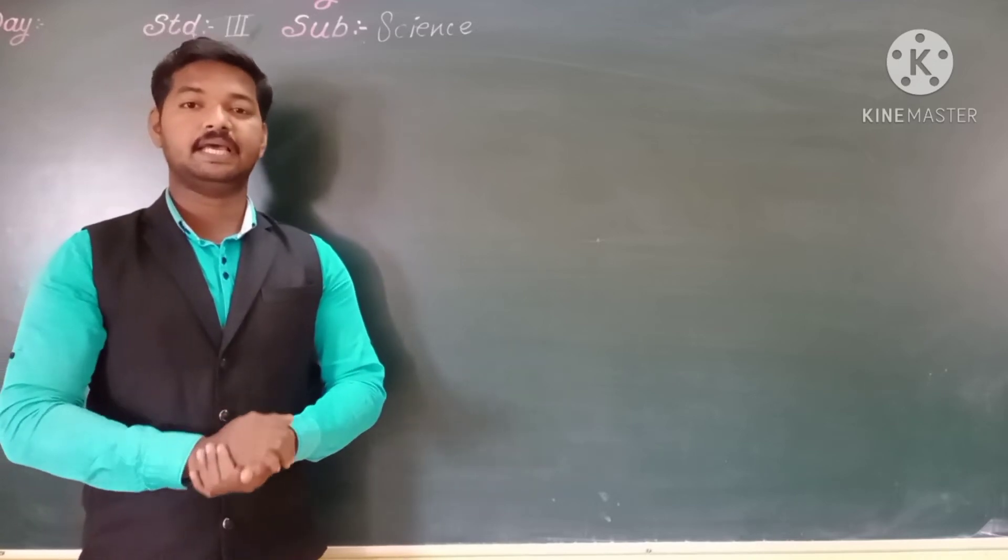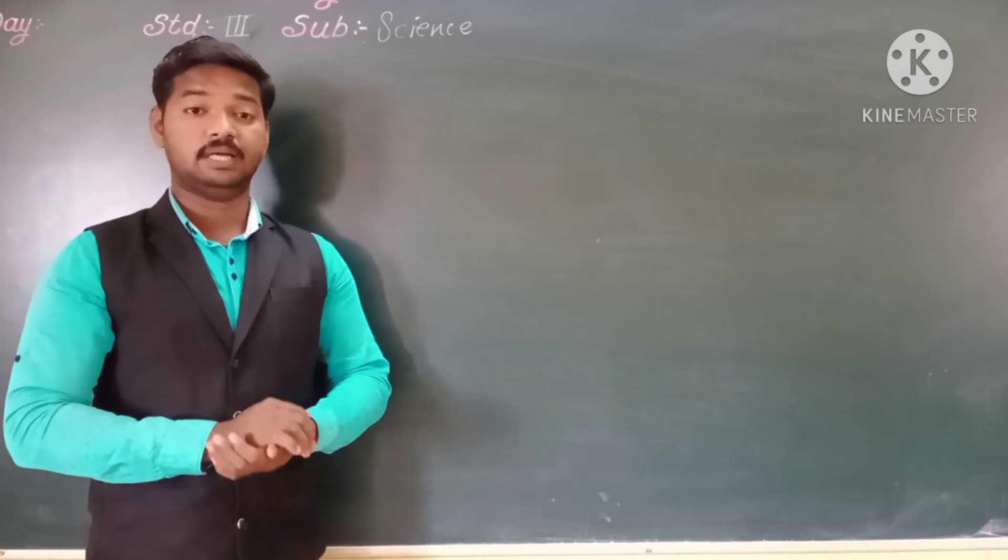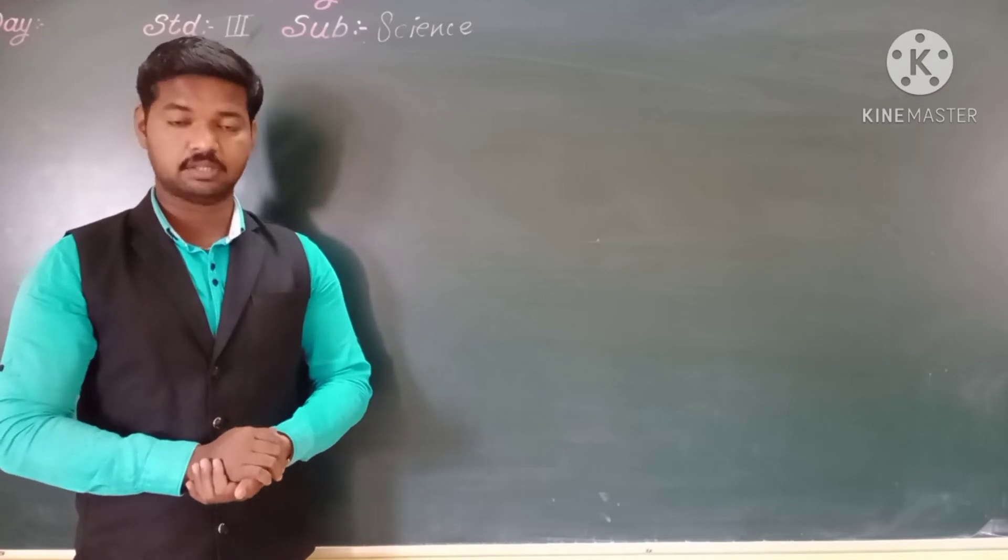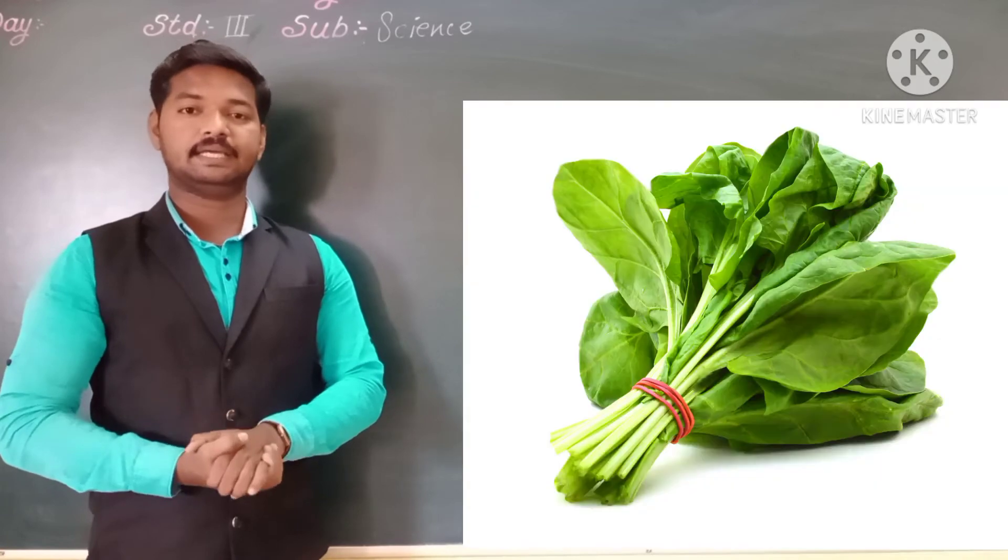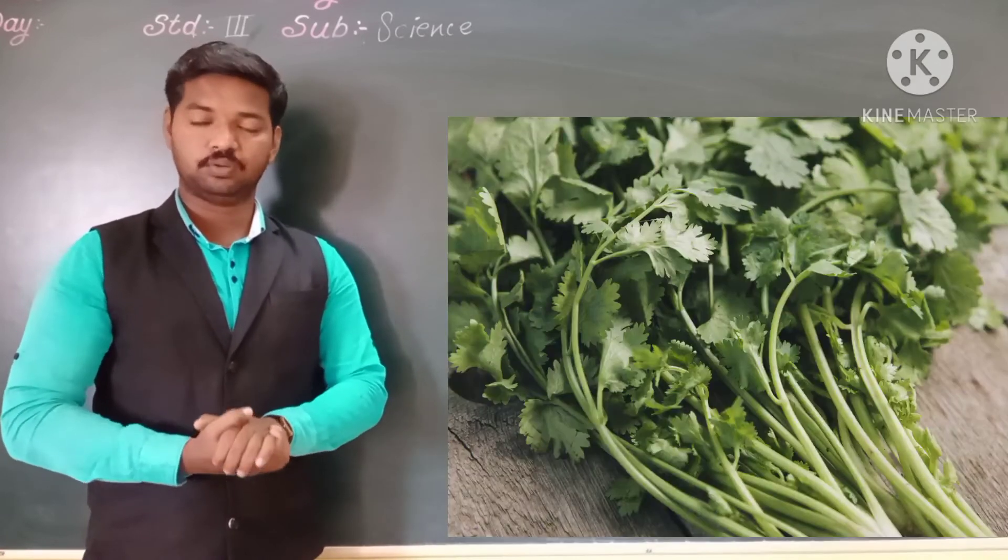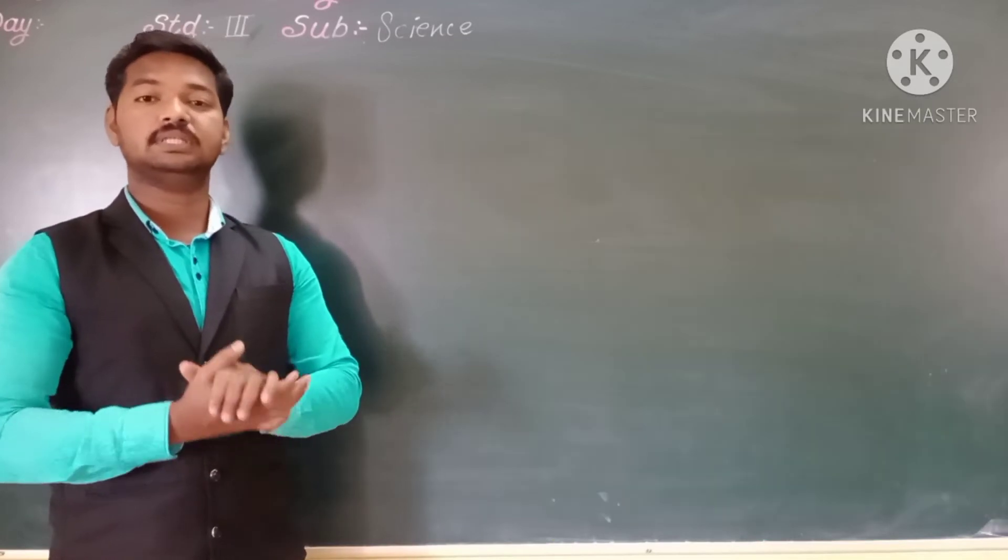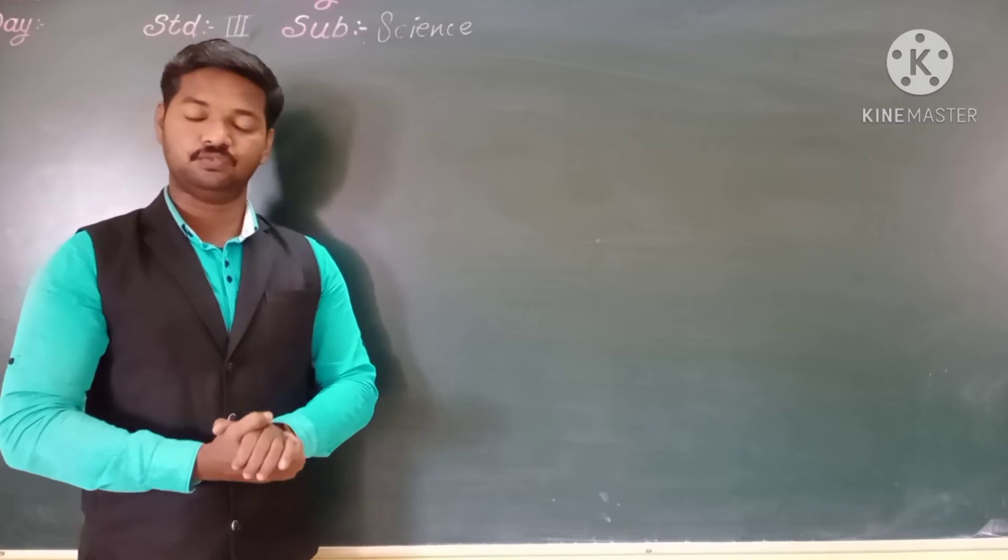Leaves help the plant to breathe through stomata. Leaves give out the extra water from the plant through stomata. So plants like spinach, coriander, cabbage, mint, they store food in their leaves and these all leaves we eat as food.